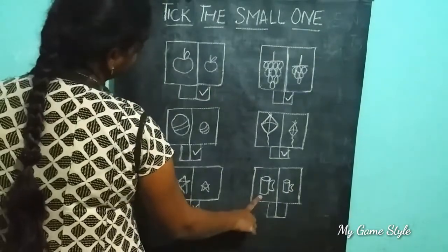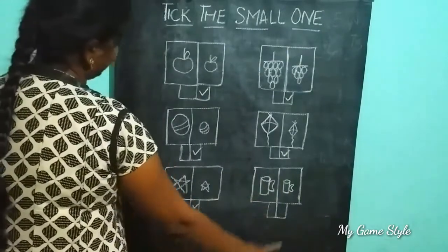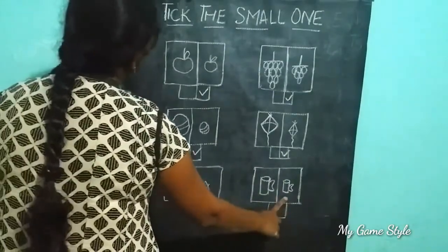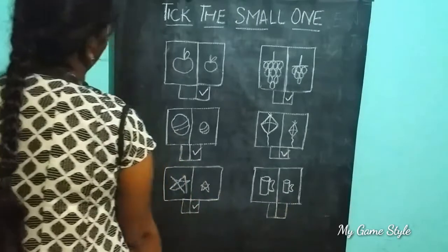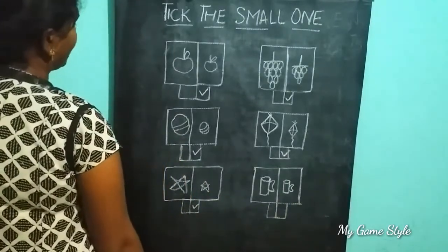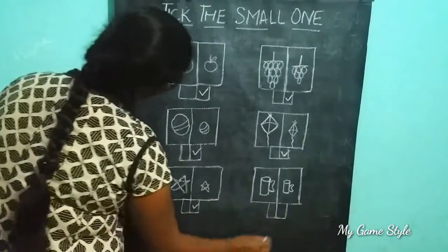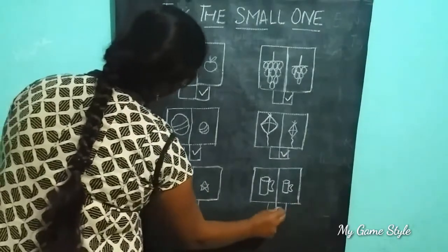Here this is a big cup. This is a small cup. So we need to tick the small one.